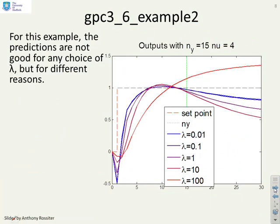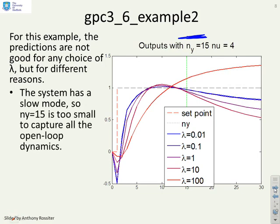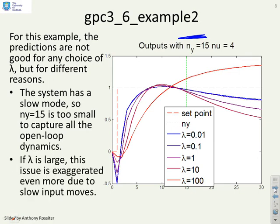What about example 2? Well in this example the predictions are pretty lousy if I use ny equals 15. You can see that beyond the horizon the predictions are not really anything like what I want them to be, so we can straight away say ny equals 15 isn't going to do a good job for us here. And that's because this open loop system has quite a slow mode in it. If lambda is large then the issue is just exaggerated, it's made worse.